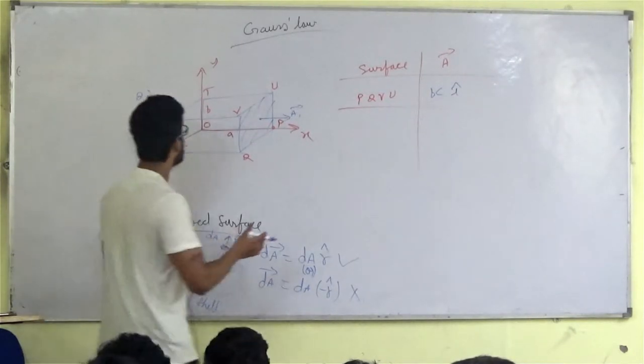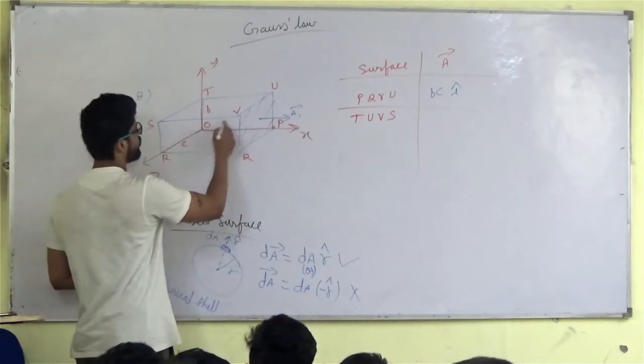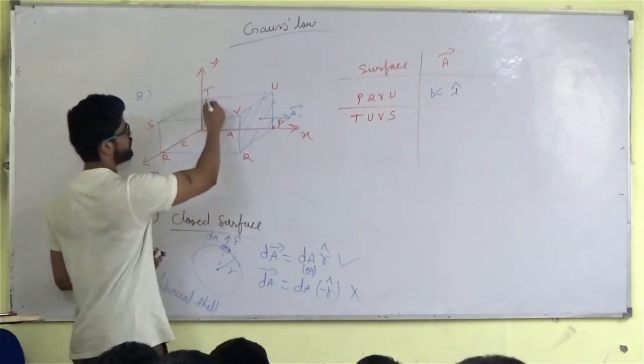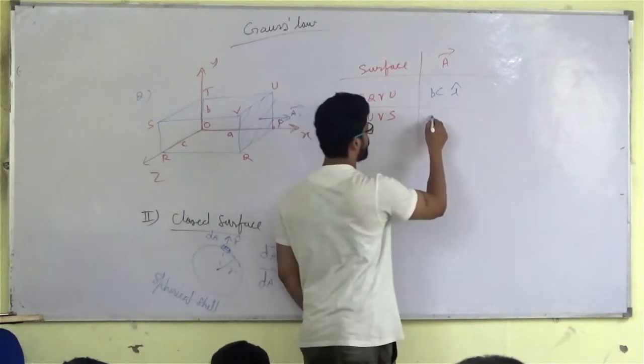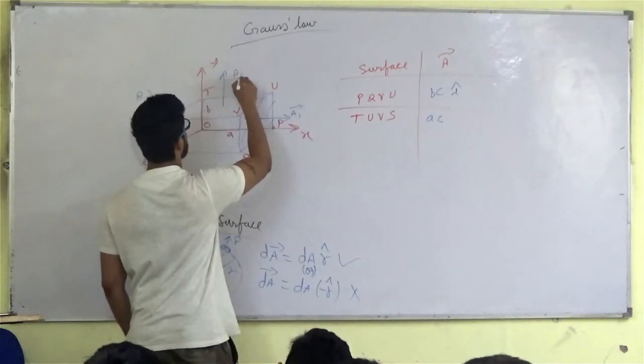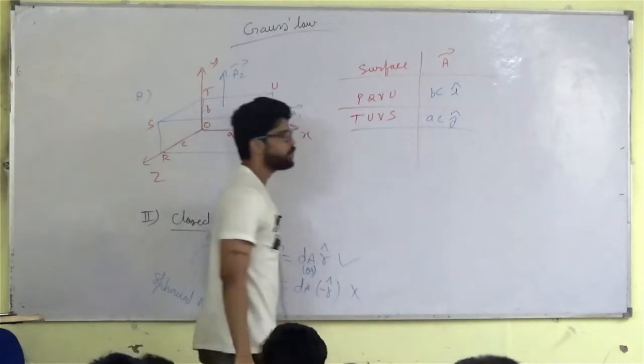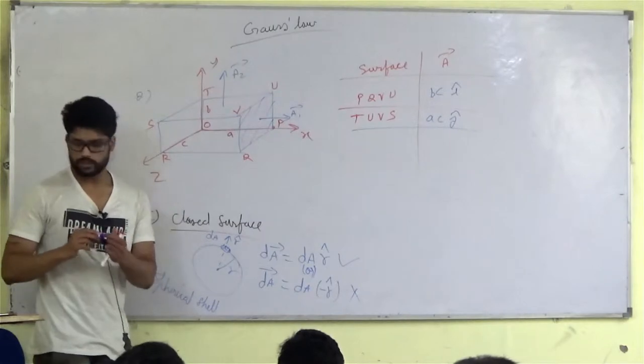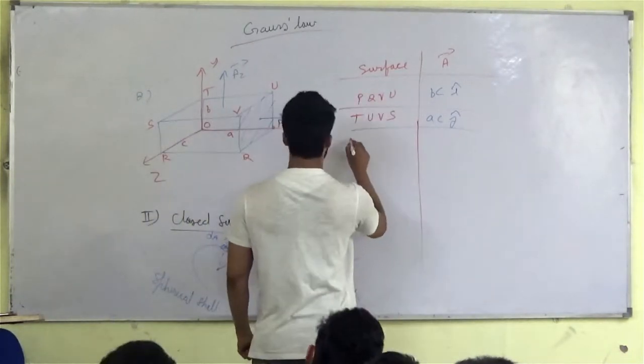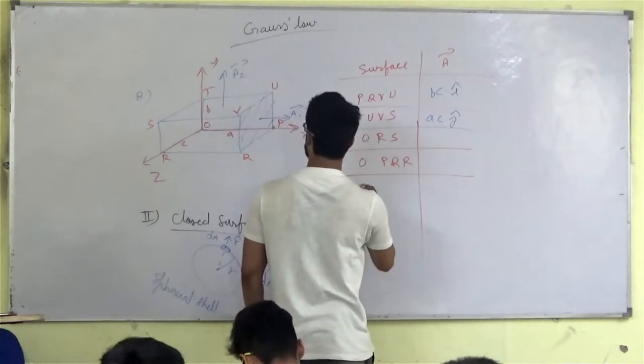Let's go T, U, V, S. How many, this length is AC. A and how many this length is? C. Area is AC. Direction, this will be the direction J cap.